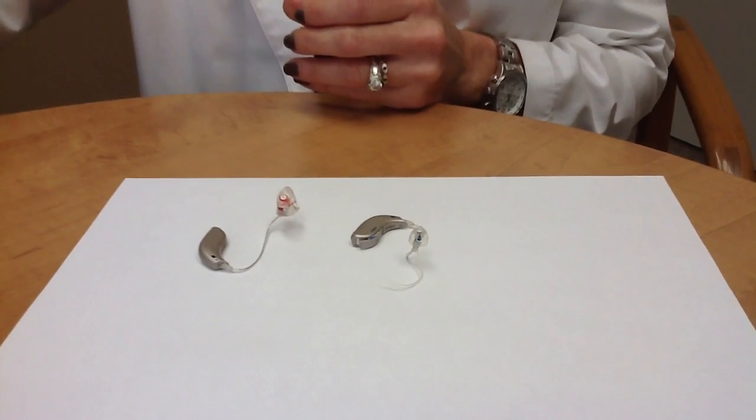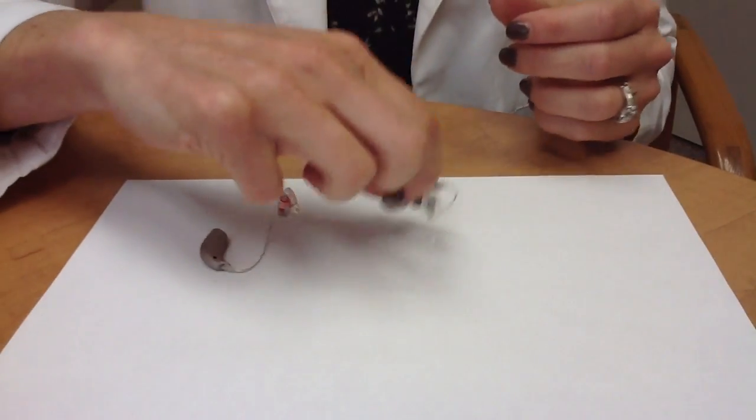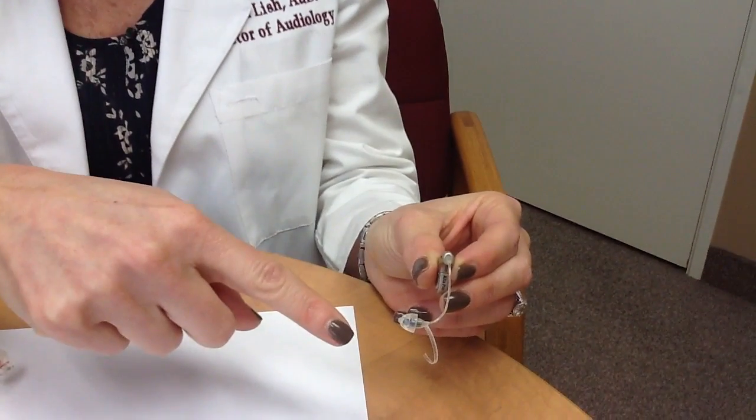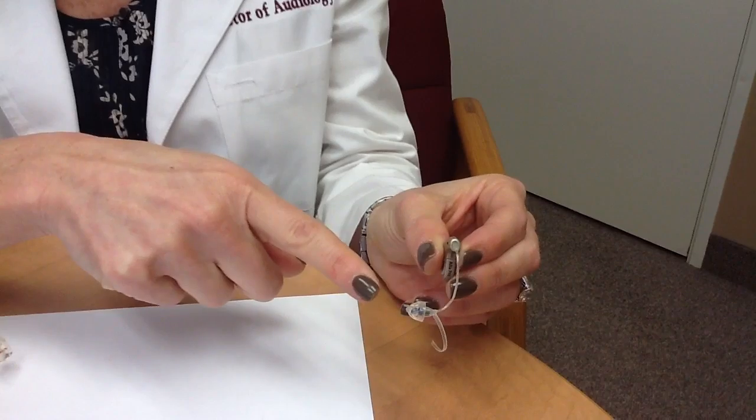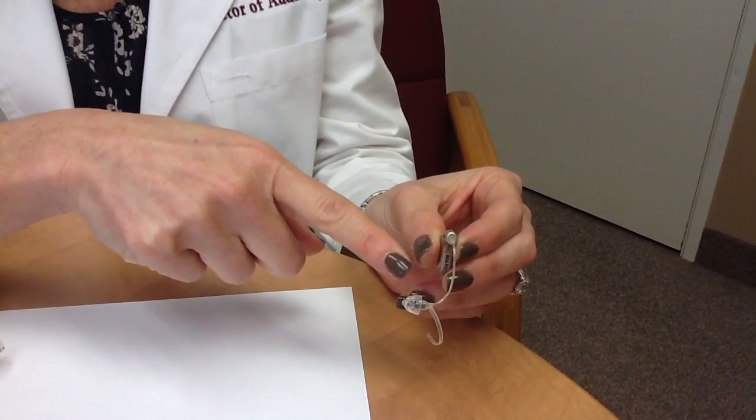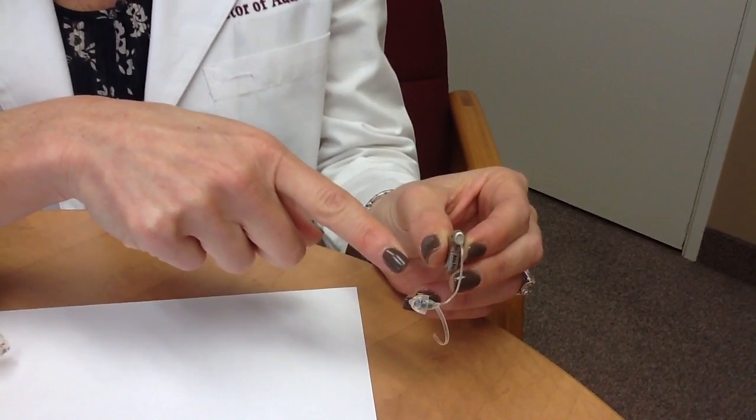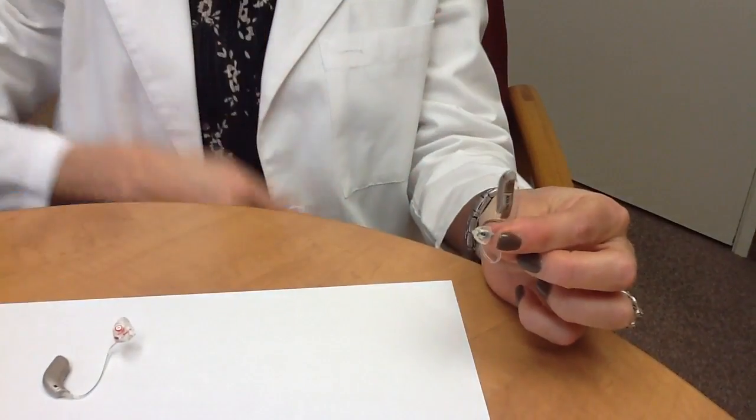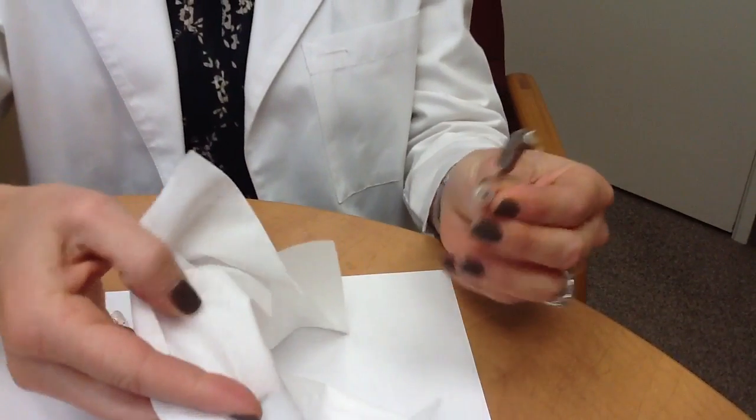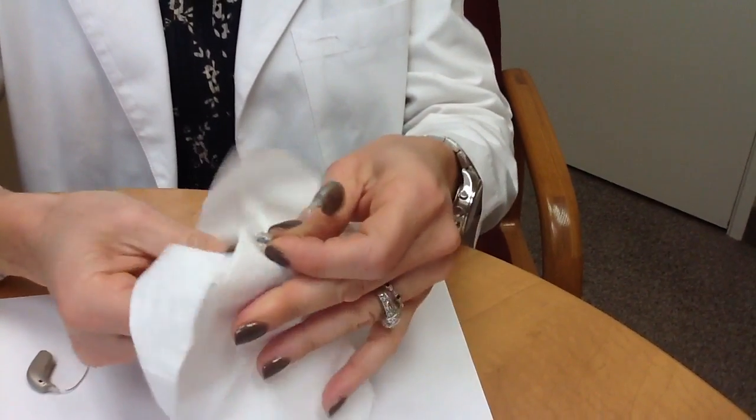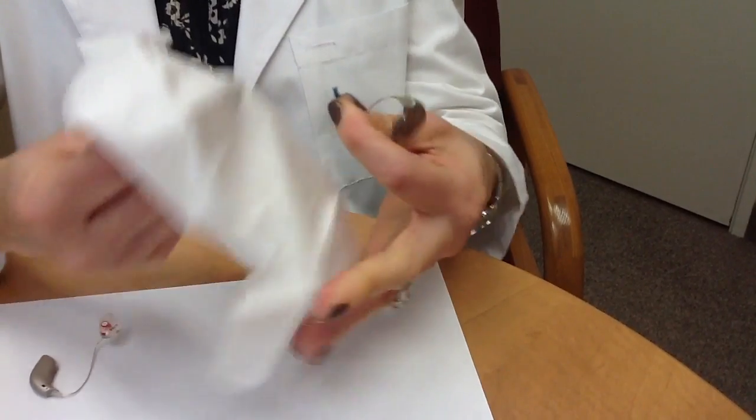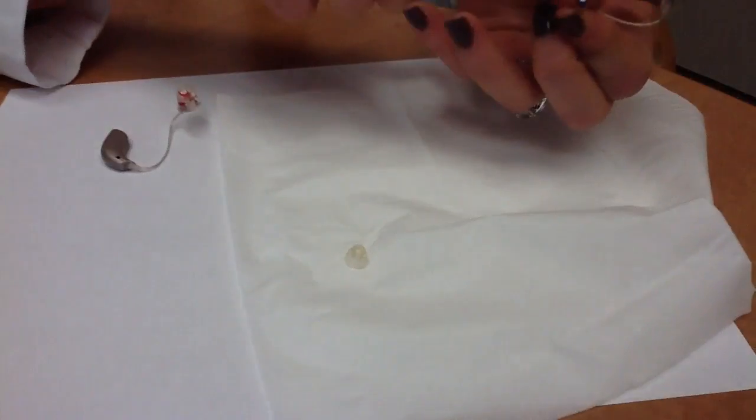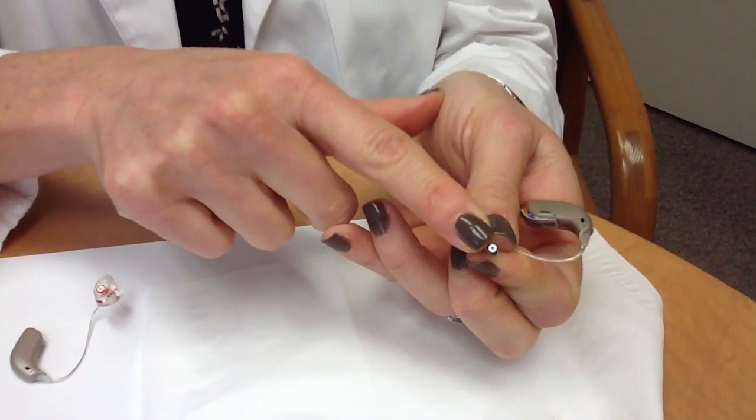Now I'm going to show you how to change it on a receiver-in-the-canal style hearing aid that has a dome on the end. The wax guard is actually located underneath the dome, so the first thing you have to do is remove the dome. I think the easiest way to do that is to grab the end of the dome in a tissue. If you pinch the end and wiggle it off, the dome comes off very easily and exposes another white wax guard.